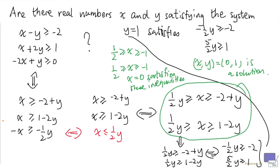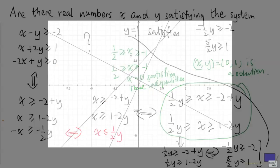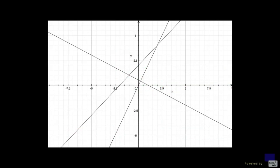Now let's look at the graph of this system. So here's a graph of the system, and the points that satisfy all three inequalities are in this shaded region.